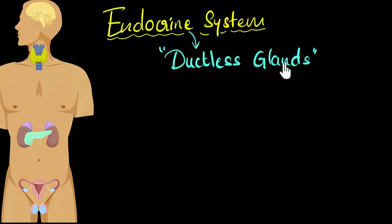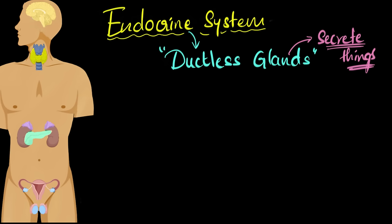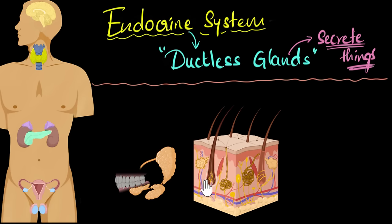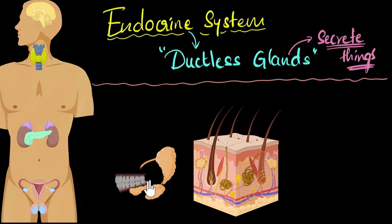So what are these ductless glands? Let's start with the word gland. A gland is any organ that secretes things. For example, something you might be familiar with is your sweat gland — it secretes sweat onto your skin. Your salivary gland is the one that secretes saliva into your mouth. So anything that secretes stuff is what we call a gland. The saliva and sweat glands have a piping system — a duct to carry their secretions to wherever they're supposed to go. So these glands are called duct glands.